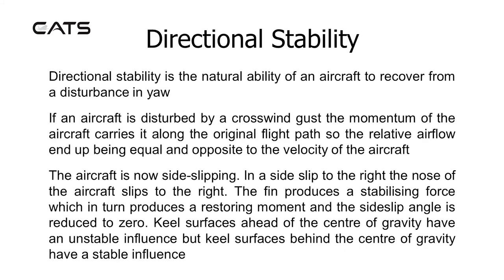Directional stability is the natural ability of an aircraft to recover from a disturbance in yaw. If an aircraft is disturbed by a crosswind gust, the momentum of the aircraft carries it along the original flight path, so the relative airflow ends up being equal and opposite to the velocity of the aircraft — the aircraft is now sideslipping. In a sideslip to the right, the nose of the aircraft slips to the right. The fin produces a stabilising force, which in turn produces a restoring moment, and the sideslip angle is reduced to zero.